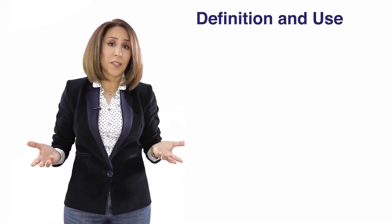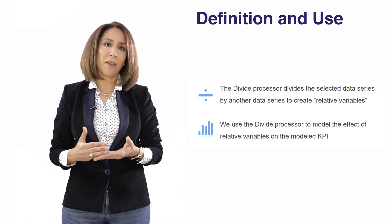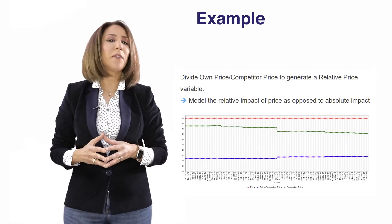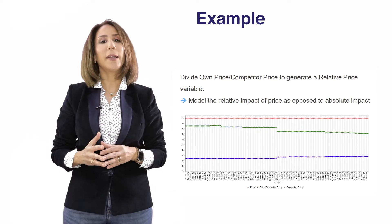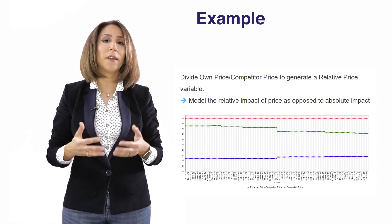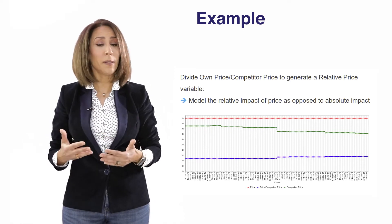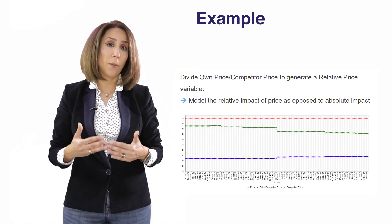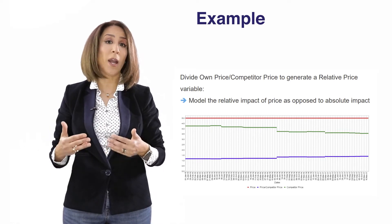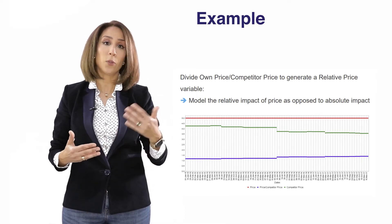The Divide processor is used to divide one variable by the other — for example, to create a relative variable. In this illustration we have created a relative price variable by dividing the price of the brand being modeled by the price of its competitor. If it's above one, the brand's price is higher than competition; if it's less than one, we are more competitive on price.